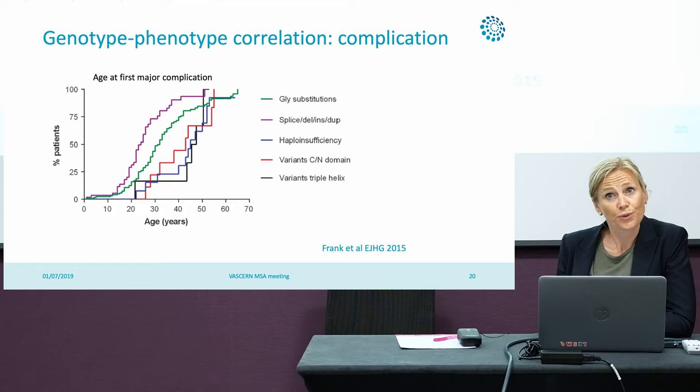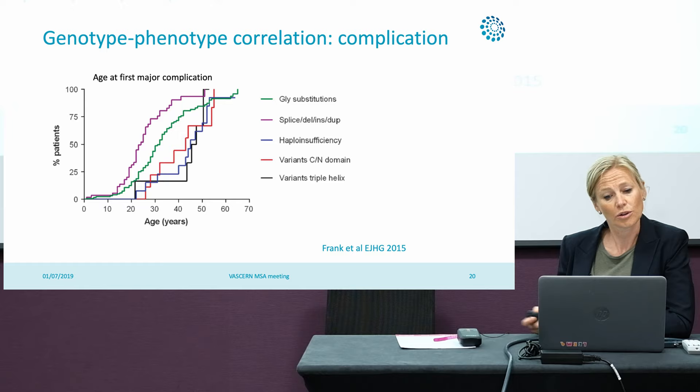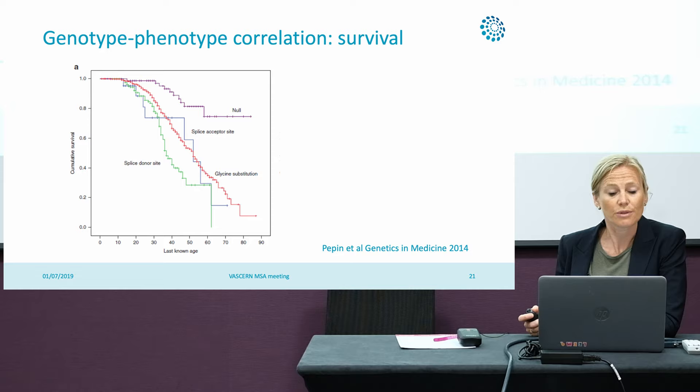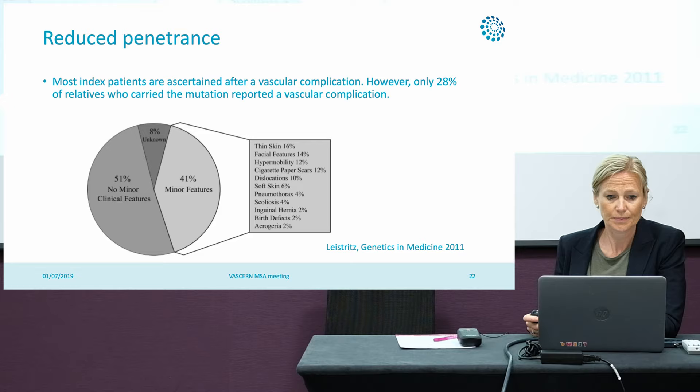Patients with a haploinsufficient variant have a milder phenotype. Here you can see the blue line showing that patients have an older age at first major complications — on average about 15 years later than for the other variants. We also see better survival in haploinsufficient patients, shown by the purple line, compared to the other variants.